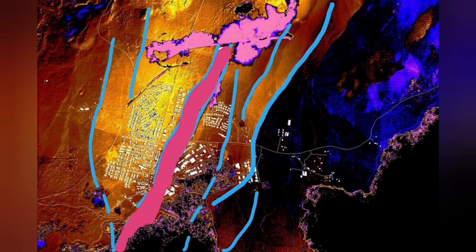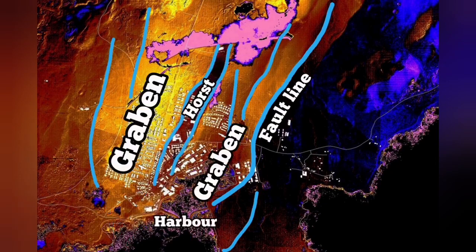Through this graben that you can see in the middle part, and the fault lines, and the horse in the middle, we had cracks in the Grindavik. But no eruption. Magma was not there.